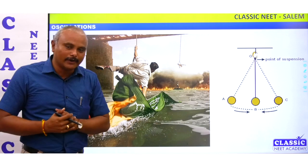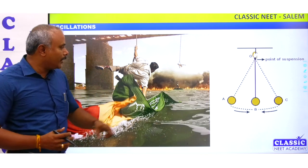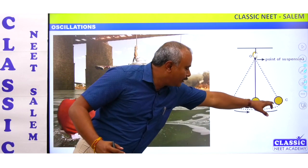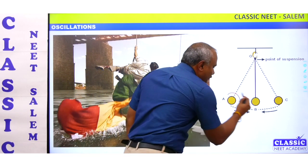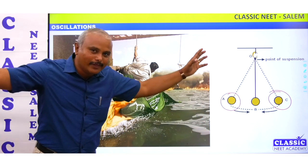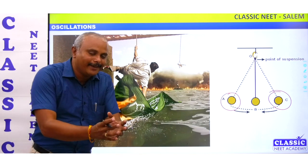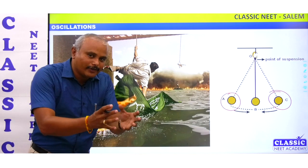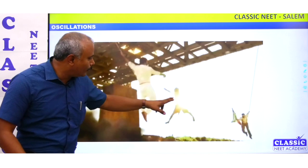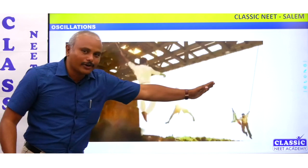Let's look at that scene. Here you can see Ramcharan and Junior NTR. The two of them are acting as pendulums — Ramcharan is one pendulum and Junior NTR is the other pendulum.